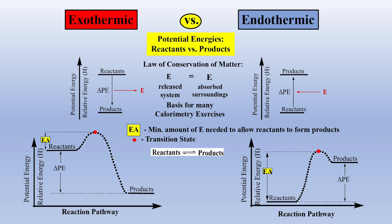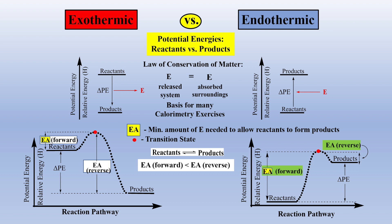If the reaction being studied is at dynamic equilibrium, we now have another way to describe an exothermic reaction: the energy of activation barrier for the forward reaction is less than the energy of activation barrier for the reverse reaction. Conversely, if an endothermic reaction is at equilibrium, the energy of activation barrier for the forward reaction is greater than the energy of activation barrier for the reverse reaction.